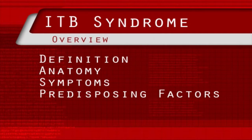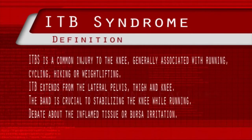Iliotibial band syndrome is one of the leading causes of lateral knee pain in runners. The iliotibial band is a superficial thickening of tissue on the outside of the knee, extending from the outside of our pelvis, over the hip and the knee, to just below the knee. The band is crucial to stabilising the knee during running, and it moves from behind the femur to the front while we're walking.